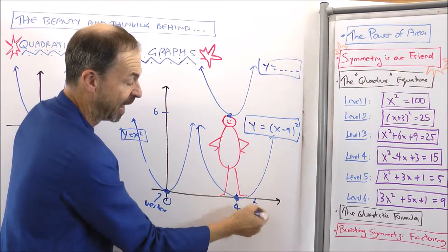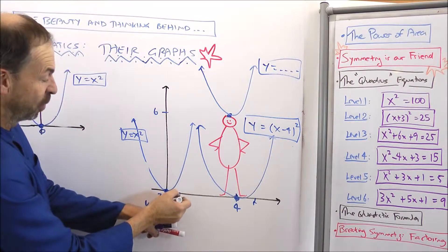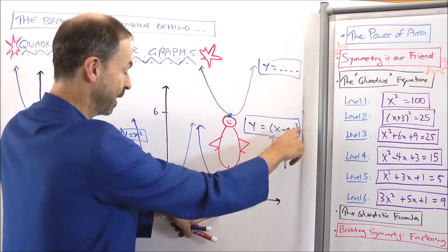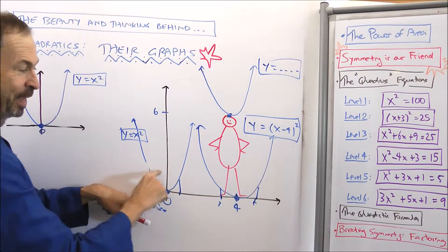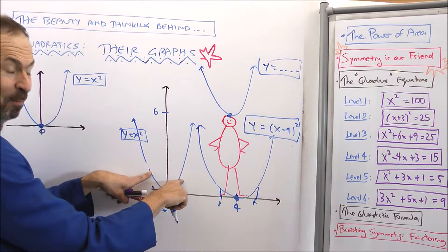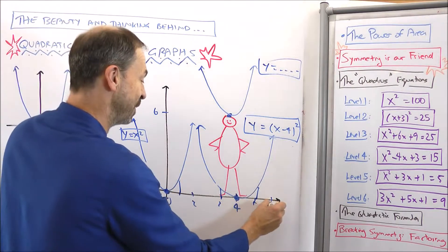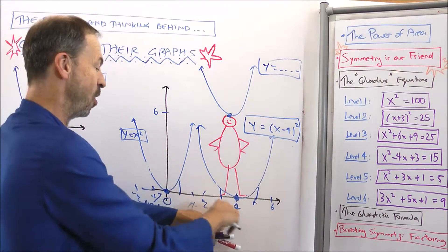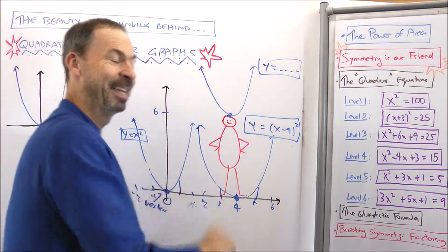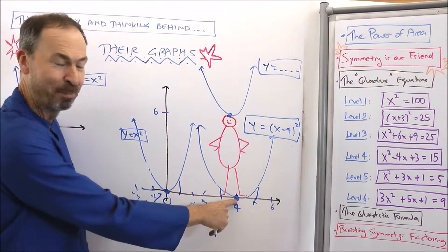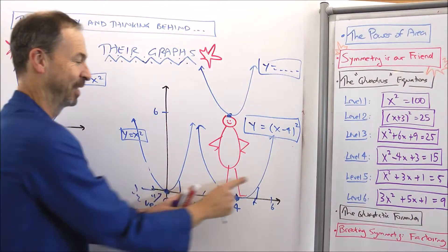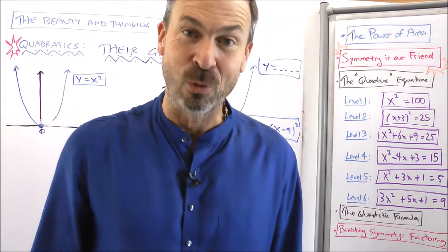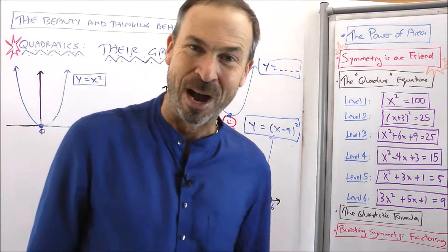You can check this is correct: if I go one over to five, I get five minus four, which is one squared — height of one, just like going one over from zero gives one squared. Going one to the left to three: three minus four is negative one squared, which is one. Either side of four gives height one, just like either side of zero — so the whole graph is now centered about x equals four.